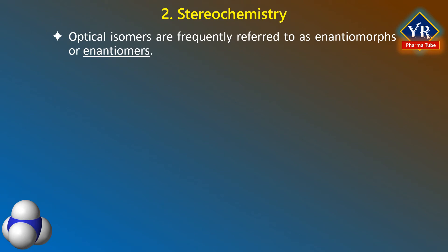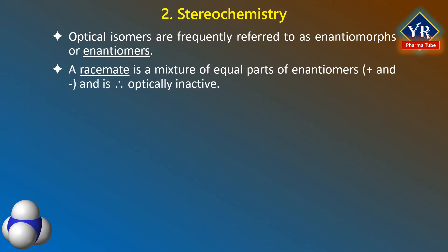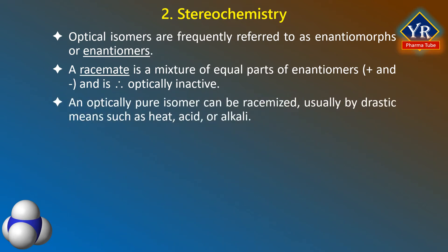Stereochemistry. Optical isomers are frequently referred to as enantiomers. Optical isomers have the same chemical formula but differ in their arrangement of atoms or groups within the molecule and have non-superimposable mirror images. Enantiomers are mirror images of each other. A racemic modification or racemate is a mixture of equal parts of enantiomers — that is, plus and minus — and is therefore optically inactive. An optically pure isomer can be racemized usually by drastic means such as heat, acid, or alkali treatment.